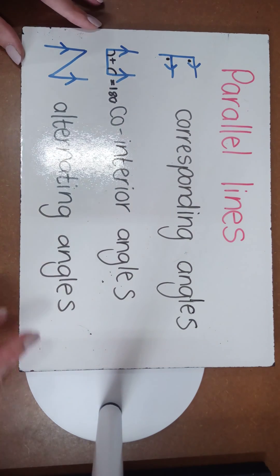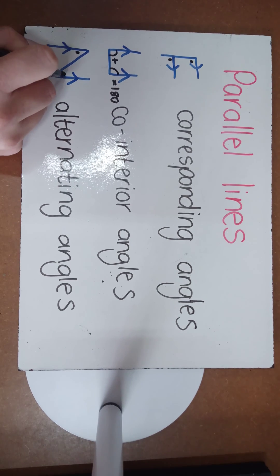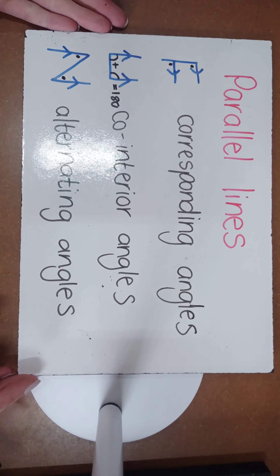And lastly, we've got your N or your Z, and that relates to alternating angles. And remember, in alternating angles, those two angles would be equal to one another.